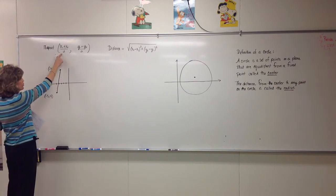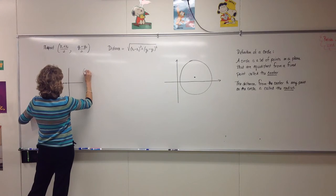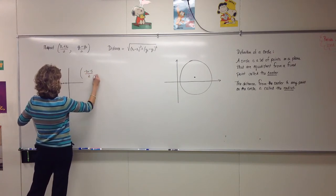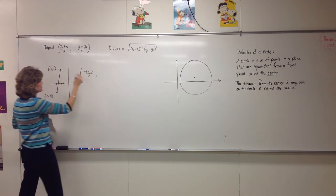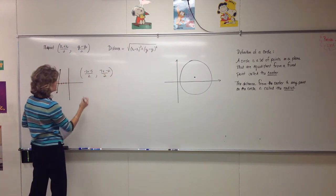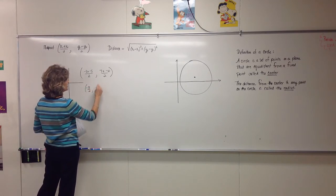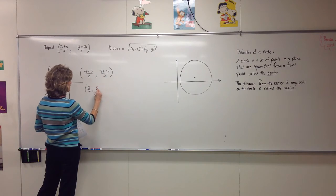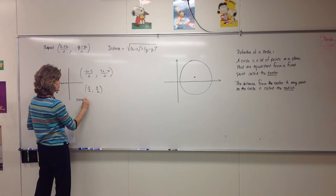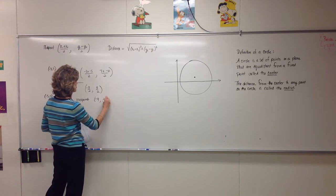According to the midpoint formula, I'll add the two x-coordinates: negative three plus negative five, and divide by two. Then I'll average the y-coordinates: seven plus negative four divided by two. That gives me a midpoint of negative eight divided by two, comma, seven plus negative four is three divided by two. So the midpoint is negative four, comma, 1.5.